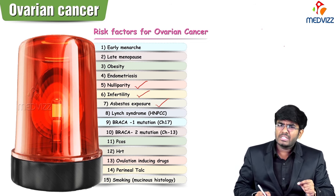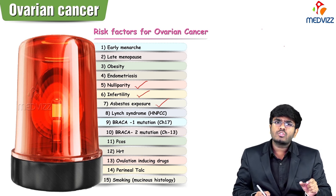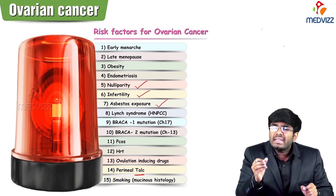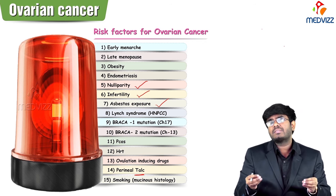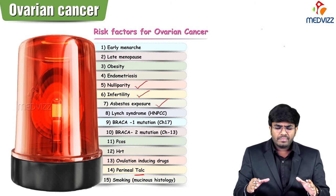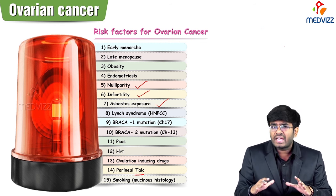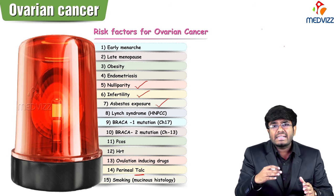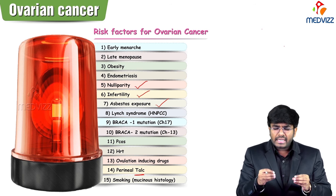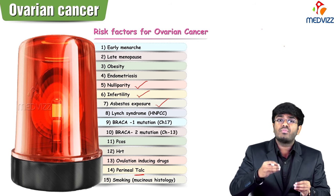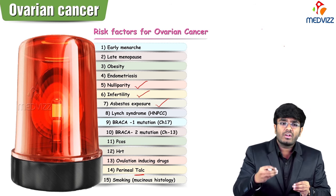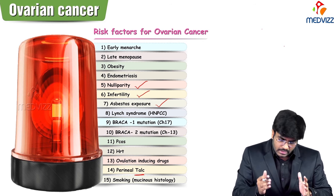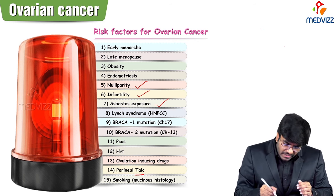Asbestos exposure is a carcinogenic agent thought to cause ovarian cancer. Asbestos is present in some quantity in talc. Some females use perineal talc daily to keep the vulval region dry. This perineal talc containing asbestos can find its way into the blood circulation and may reach the ovary, causing ovarian cancer.